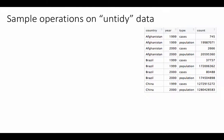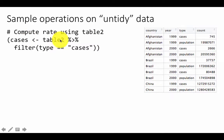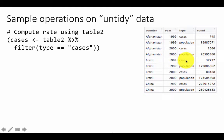To do this, this is our Table 2. So we are trying to compute the rate using Table 2. First, we are going to extract the cases for each country. We get all the cases by doing: cases is Table 2 piped to filter where type equals cases. So what will happen is you'll get Afghanistan 1999 cases 745, then Brazil 1999 cases, then Afghanistan 2000 cases and Brazil 2000 cases. So that's what cases is.